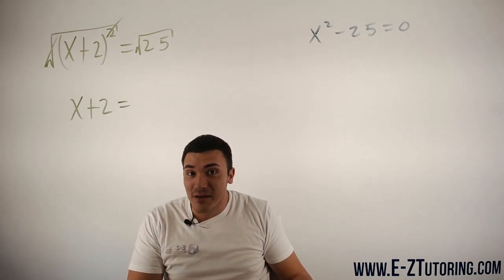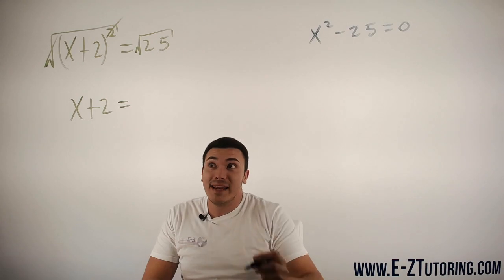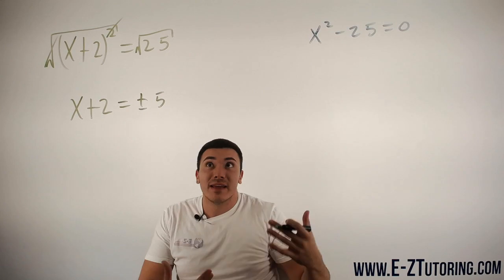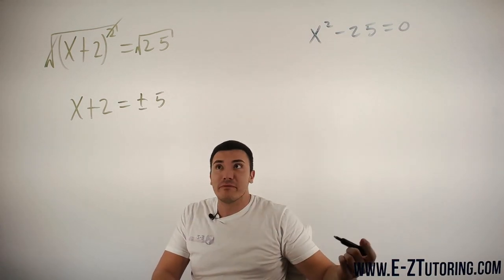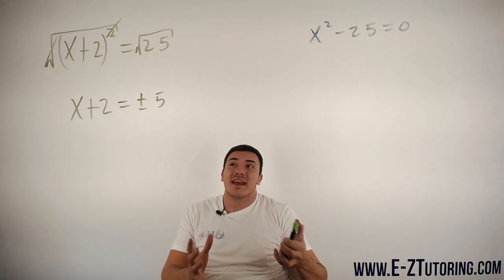A lot of people will say 5, but the truth is it can be 5 or negative 5, because negative 5 times negative 5 is positive 25. So that is how the square root property works. That is the idea behind it.